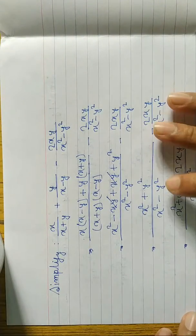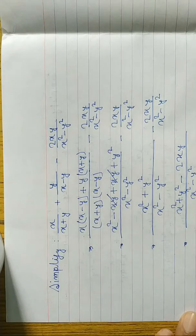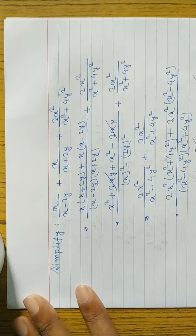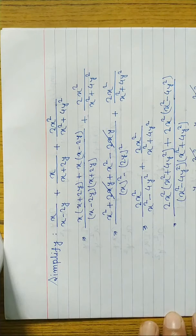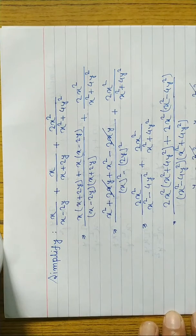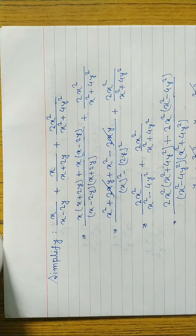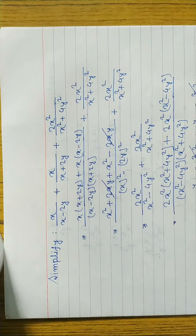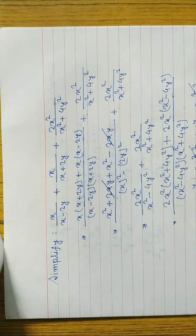Today I have done two simplification problems taken from the B and E book long questions — you can score four marks from here. If you understand, please hit the bell button, and if you are new to my channel, please subscribe and share with your friends. You can join my Facebook page or Facebook group, or send me questions on WhatsApp. Thanks for watching — have a great day!